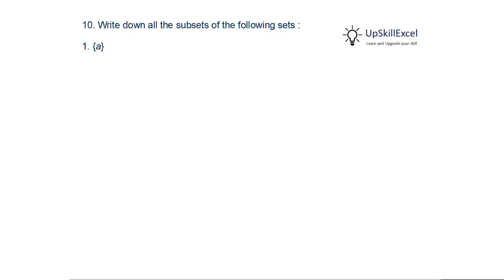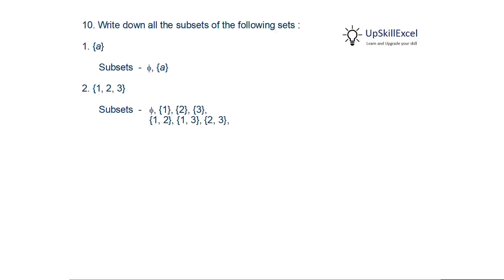The null set is a subset of {1,3,5} — this is true, as the null set is a subset of every set. Writing all subsets: for {a}, the subsets are the null set and {a} itself. For {1,2,3}, the subsets are: null set, {1}, {2}, {3}, {1,2}, {1,3}, {2,3}, and {1,2,3}. For the null set, its only subset is the null set itself.